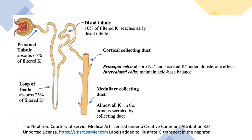These are the segments of the nephron. We said that with potassium, almost 100% of it is reabsorbed in the proximal tubule, the loop of Henle, and the distal tubule. All the potassium present in the urine is secreted in the collecting duct.